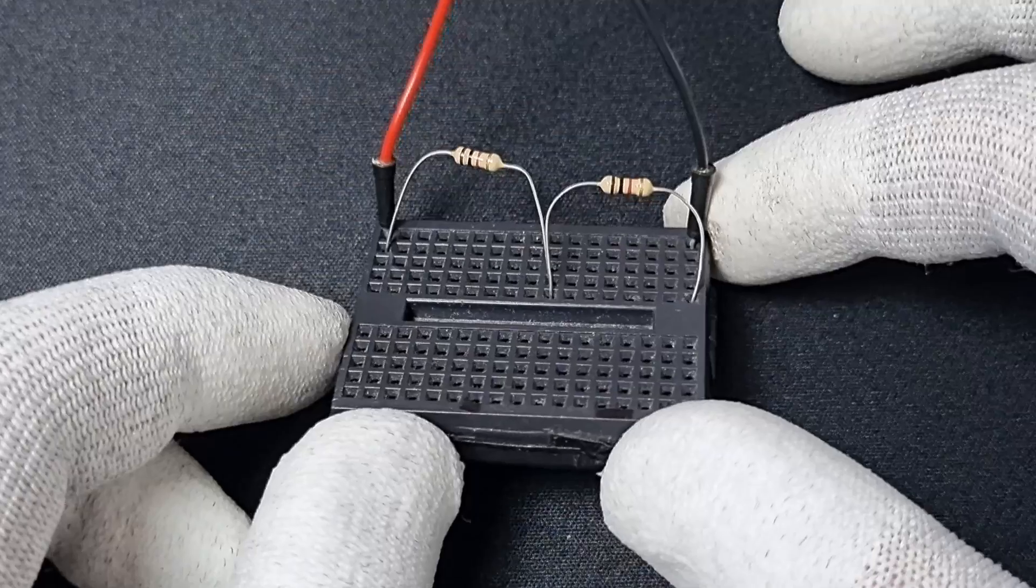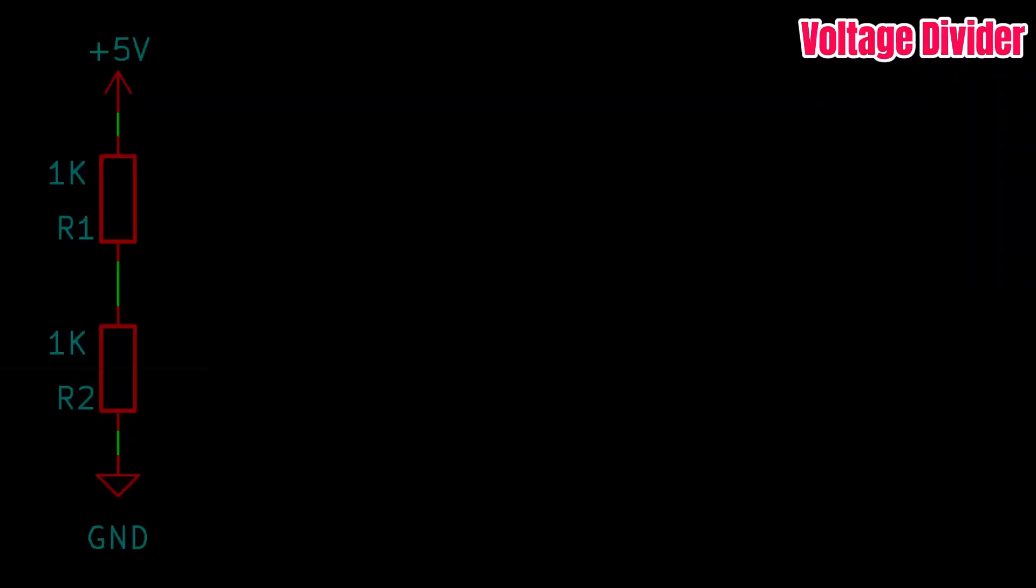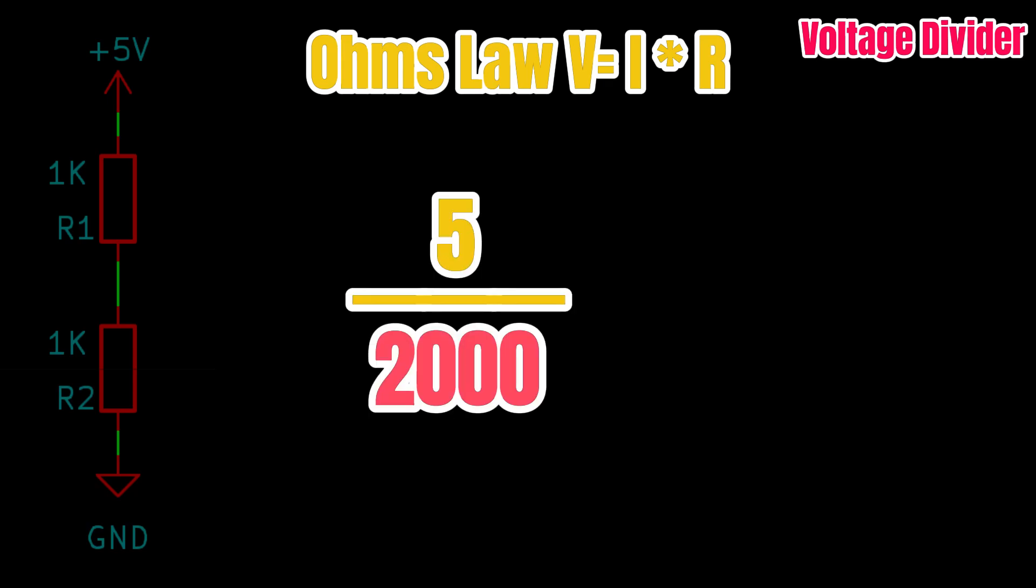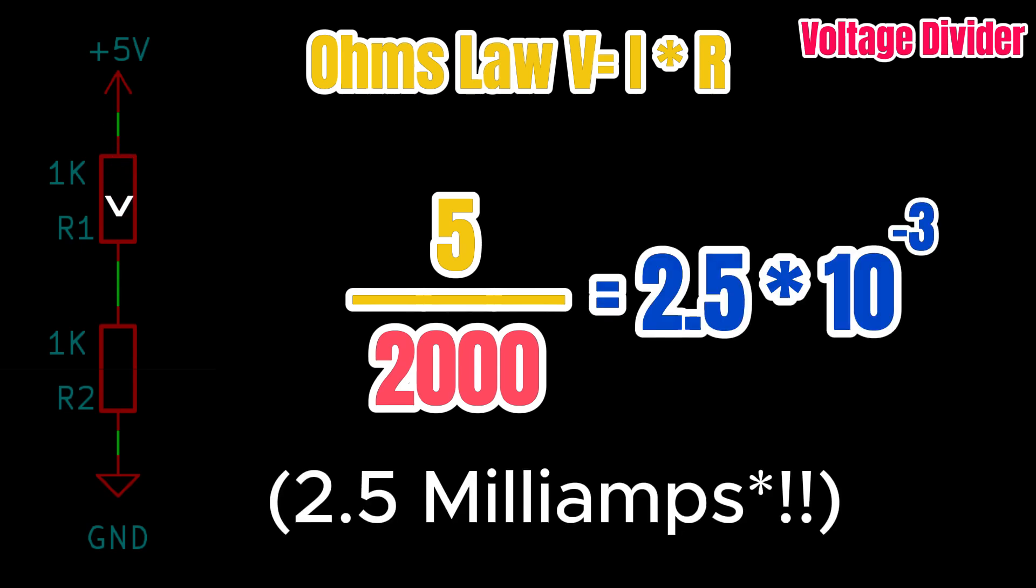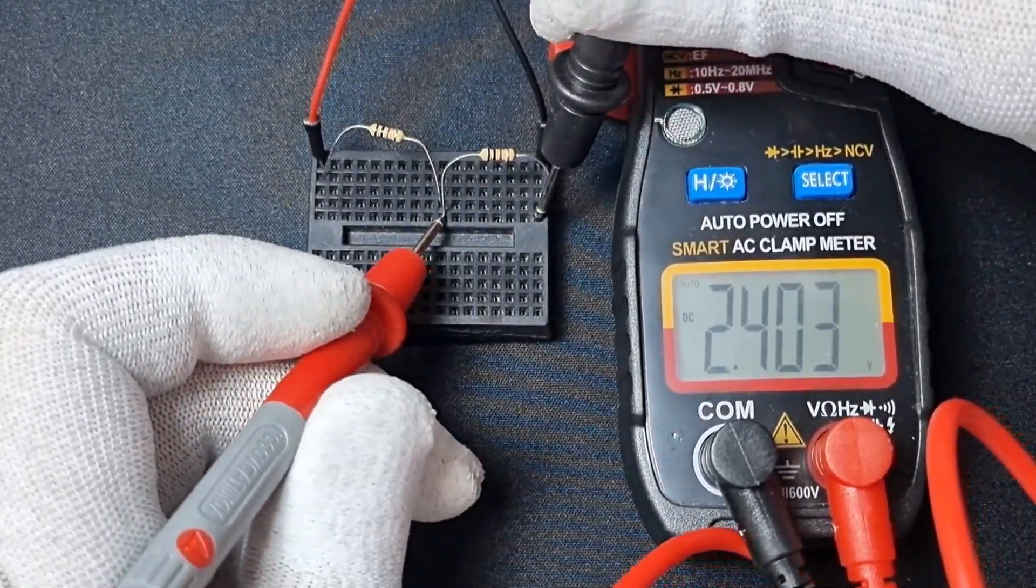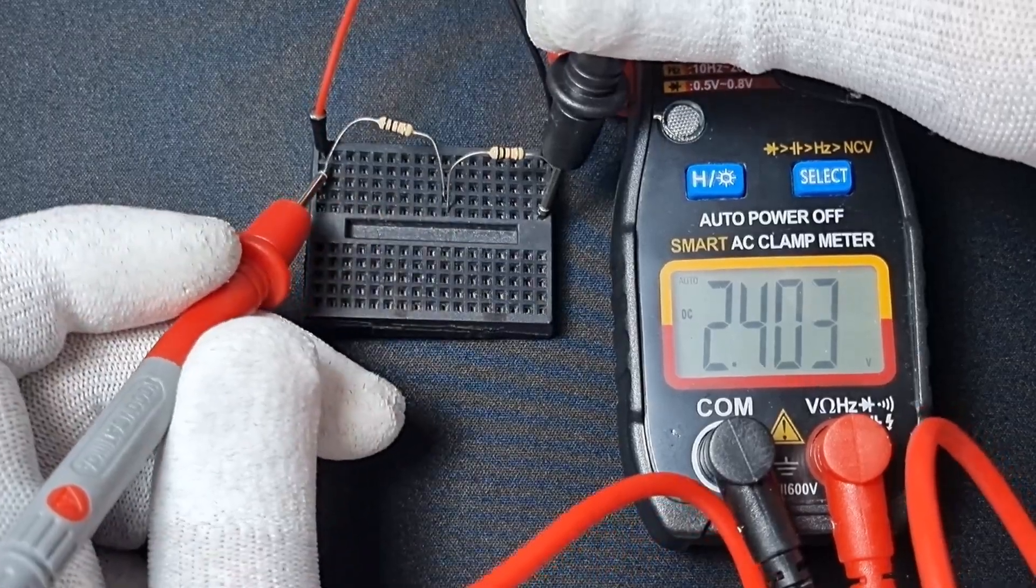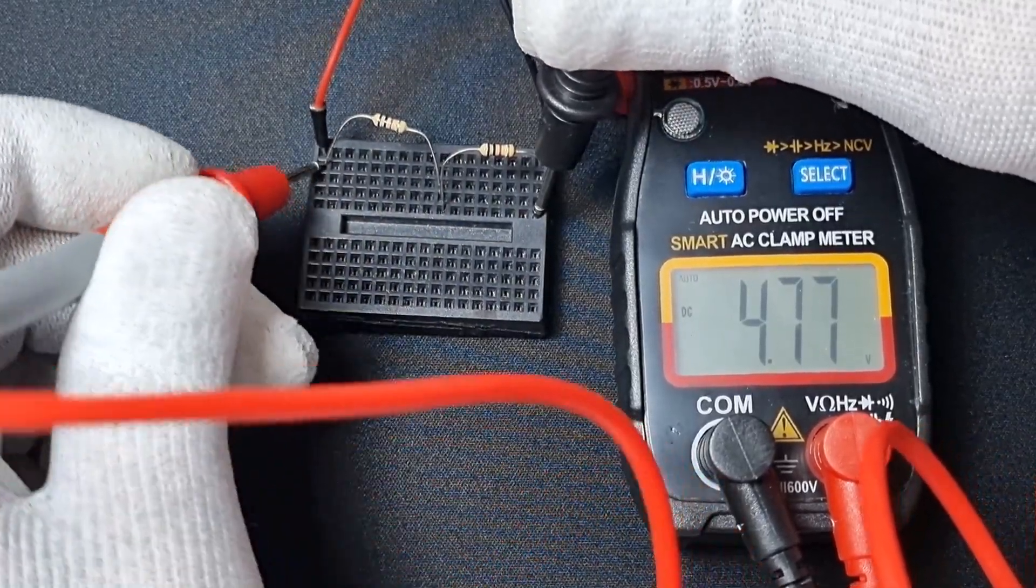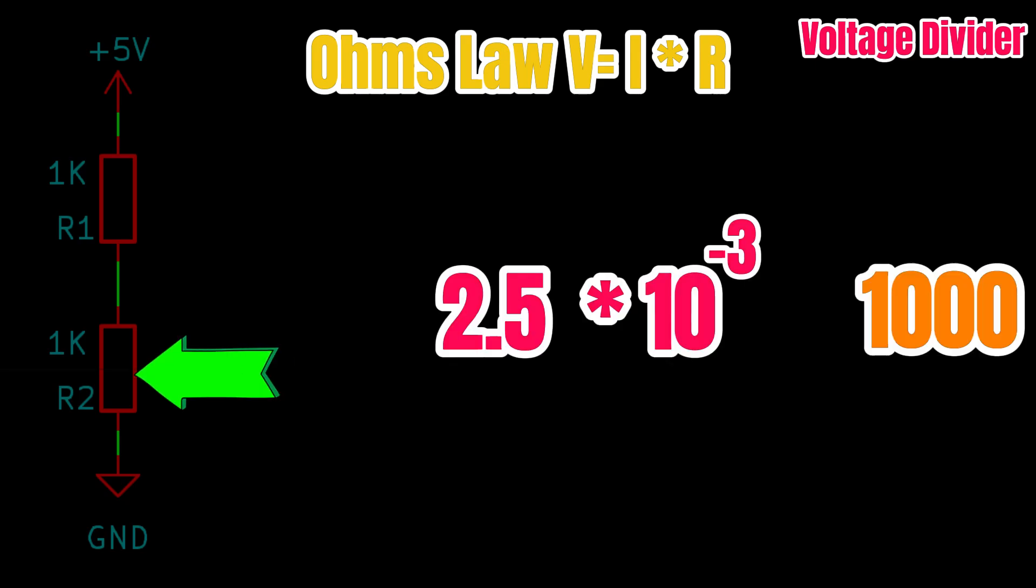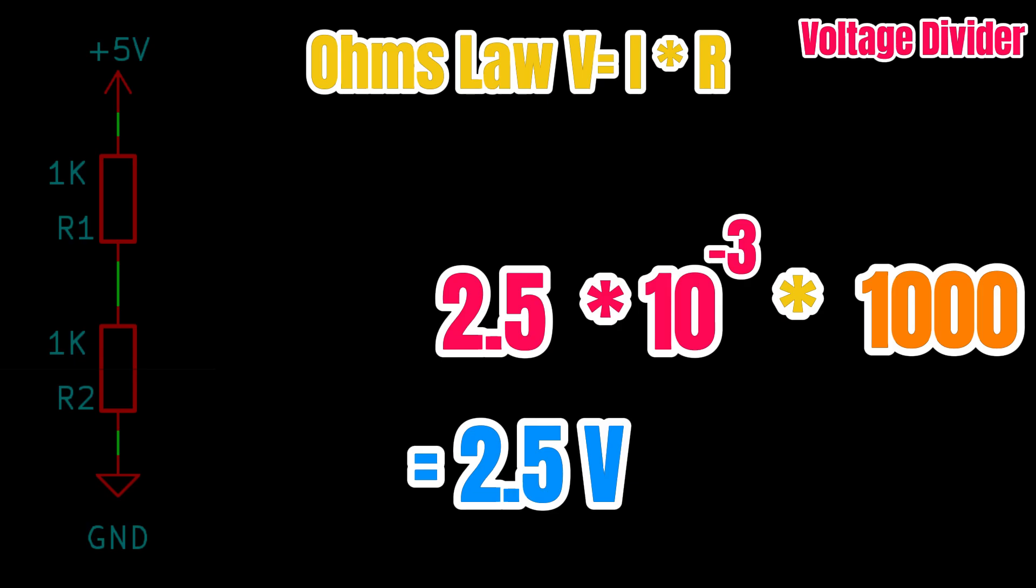Another interesting thing you can do with a resistor is create a voltage divider. As you can see, I've connected two 1 kilo ohm resistors in series and applied 5 volts at the top of the circuit. What's happening now is that 5 volts divided by 2000 ohms gives us 2.5 milliamps of current flowing through these resistors. When I measure the voltage in the middle, it shows 2.5 volts. We are effectively measuring the voltage drop across one of the resistors. Remember, our current is 2.5 milliamps and the resistor is 1 kilo ohm, so 2.5 milliamps multiplied by 1000 gives us 2.5 volts. I'm just using Ohm's law to calculate the output voltage.